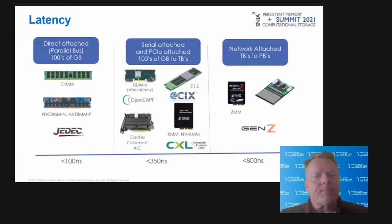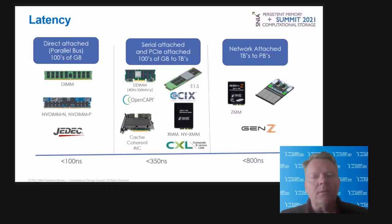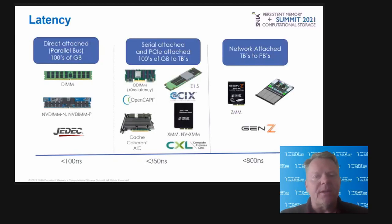Another challenge is latency. High-speed access to memory and persistent memory is critical in transforming raw data into usable information. On the left are the DIMMs and NDIMMs — they have the lowest latency, less than 100 nanoseconds, and typically provide up to hundreds of gigabytes of memory. In the middle are the serial attached form factor options providing less than 350 nanoseconds of latency, with the exception of the differential DIMM which is at about 40 nanoseconds. These solutions provide hundreds of gigabytes to terabytes of memory. On the right are the network attached Gen-Z options and CXL 2.0, with latency of less than approximately 1000 nanoseconds, providing terabytes to petabytes of memory capacity.